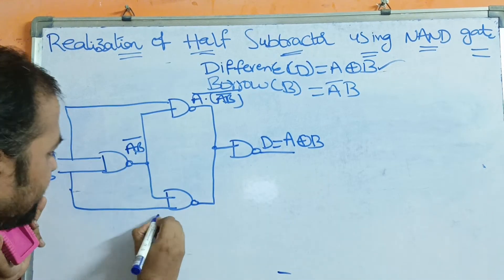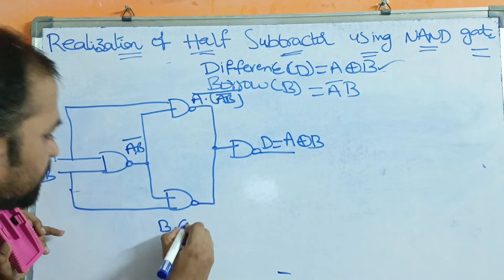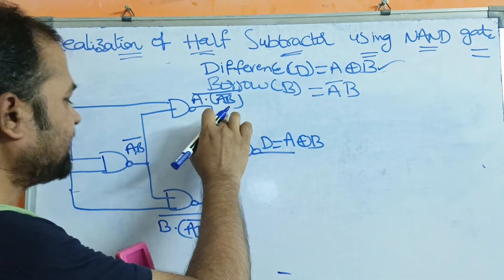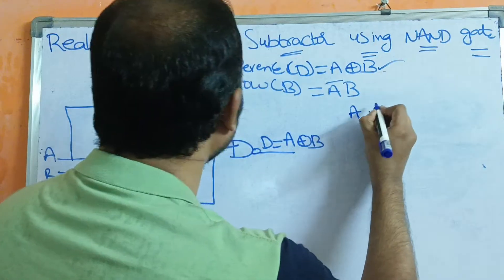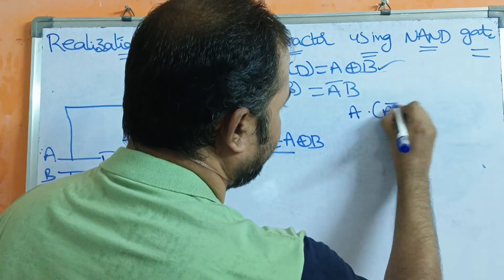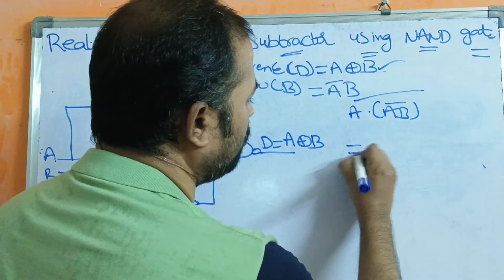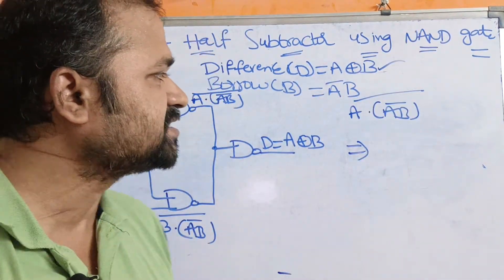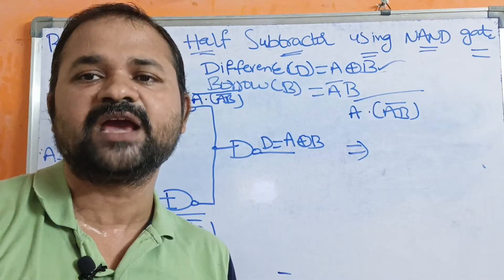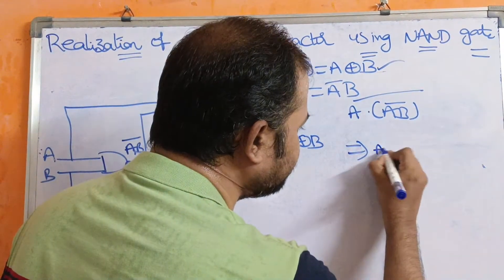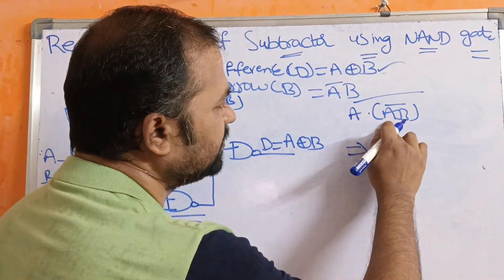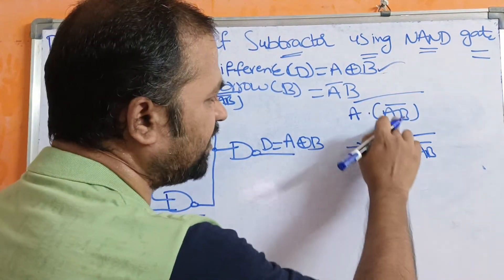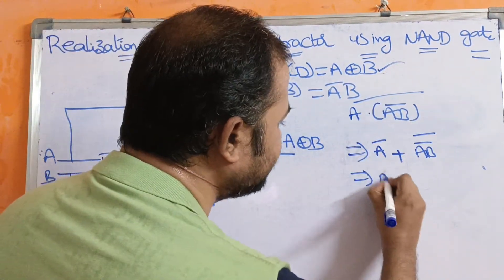The third NAND gate receives inputs B and (AB)̄, so its output is B·(AB)̄, whole bar. Now let us simplify the second NAND gate expression: A·(AB)̄, whole bar. This is in the form of (A·B)̄, so by De Morgan's law it becomes Ā + B̄. Here, the first input is A and the second input is (AB)̄, so we get Ā plus (AB)̄ bar, which simplifies to Ā + A·B. By the distributive law, A + B·C = (A+B)·(A+C), this becomes (Ā+A)·(Ā+B) = 1·(Ā+B) = Ā+B.